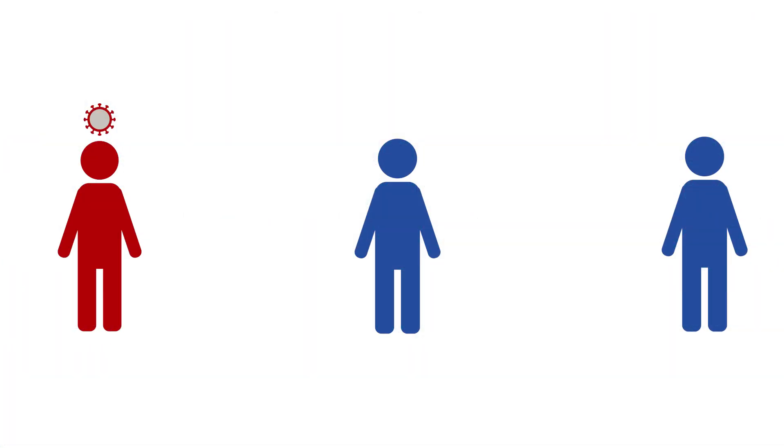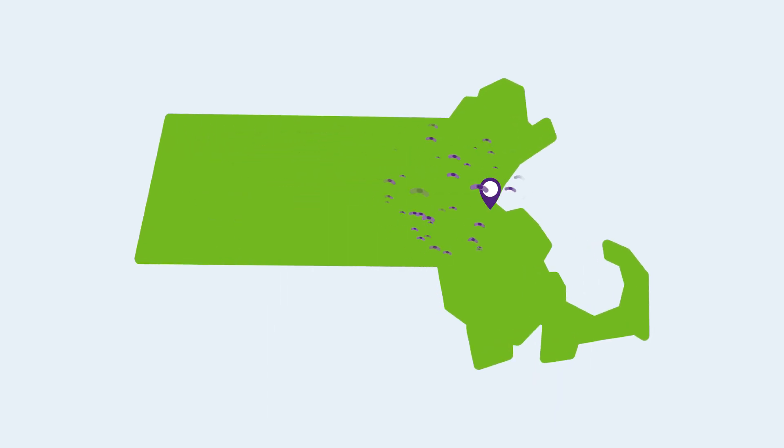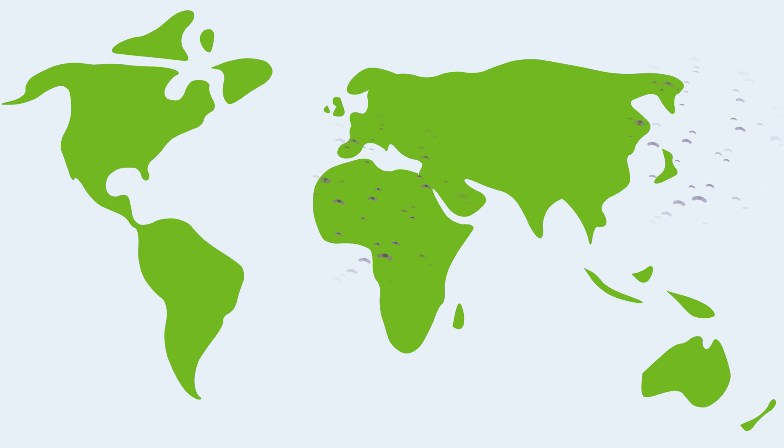For instance, they can tell whether a virus is spreading from person to person, or through contact with an animal or other reservoir. They can see whether a parasite arrived from somewhere close by, or from far away, and whether it arrived more than once.